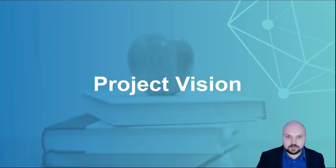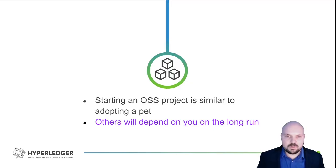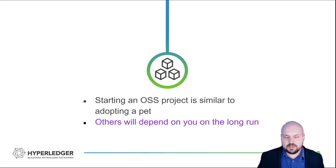The first thing is to have a project vision, which really just means that starting an open source project is similar to adopting a pet — others will depend on you in the long run. So you have to decide how much effort you will put into this and how much effort you are willing to expend to support and maintain it. This is important because the vision should be outlined in the documentation and then serve as a social contract between you and those who use the project.